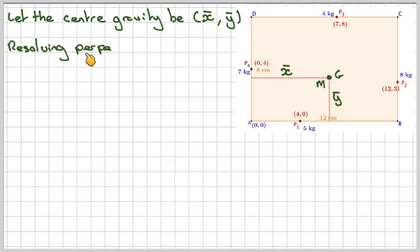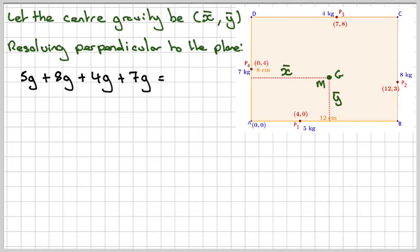So resolving perpendicular to the plane, we're going to have 5G, because it's 5 kilograms here, plus 8G, plus 4G, plus 7G. And that will be equal to the total mass times gravity. So that will give me that the total mass is 24 kilograms. Of the sum of all these masses, it's going to be 24 kilograms.